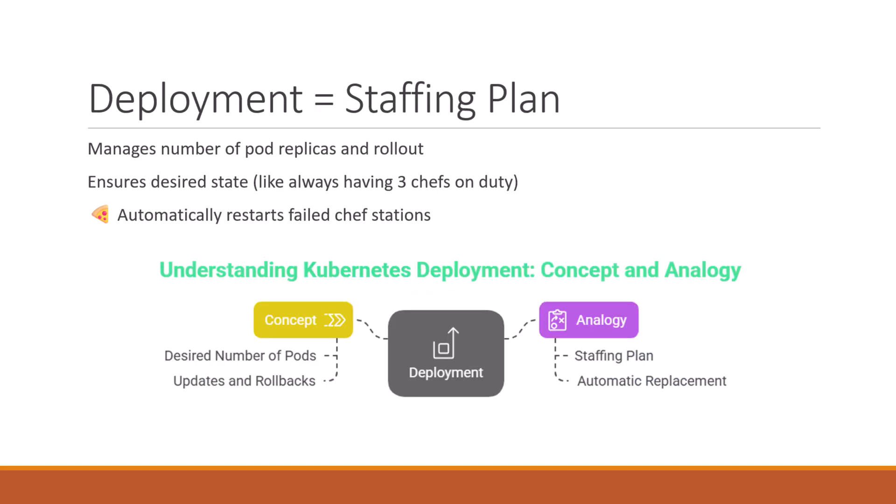Next is deployment. A deployment is like your staffing plan — headquarters says every pizza shop must always have three chefs working. If one calls in sick, the system will automatically hire another to replace them. Deployments help you scale your app and make sure the right number of pods are always running.